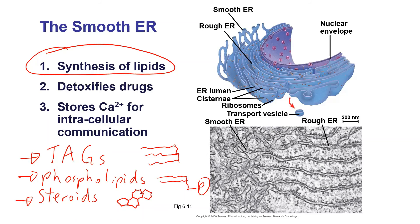Storing calcium happens in your muscle tissues — the smooth ER stores calcium important for muscle contraction. Detoxifying drugs happens in your liver. I won't ask you about those specifically, but I will ask you about the synthesis of lipids — make sure you know that one.